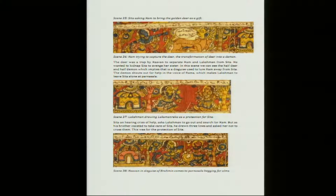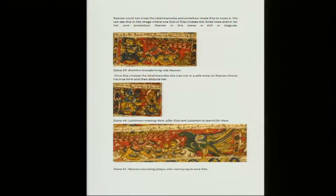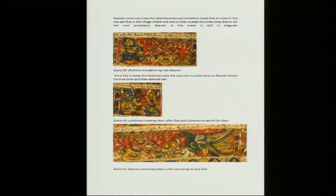In the next frame, Ravan in disguise as a Brahman comes to the Parnashala begging for alms. Ravan could not cross the Lakshman Rekha and somehow made Sita cross it. We can see in the image one foot of Sita crossing the three lines drawn for her own protection — Ravan in this scene is still in disguise.